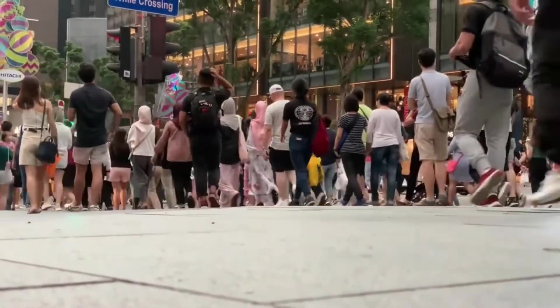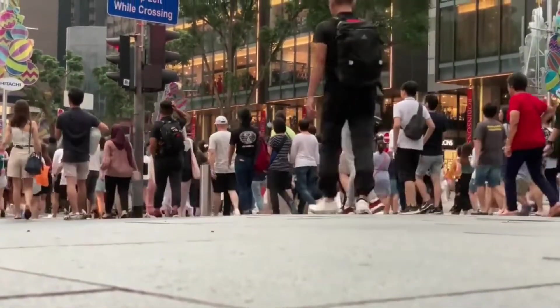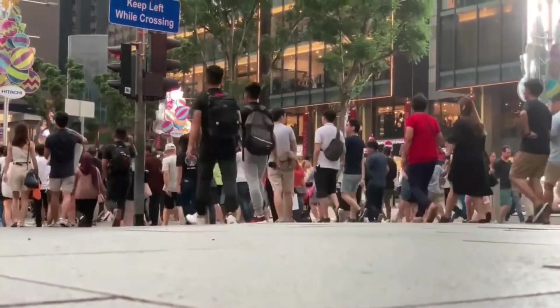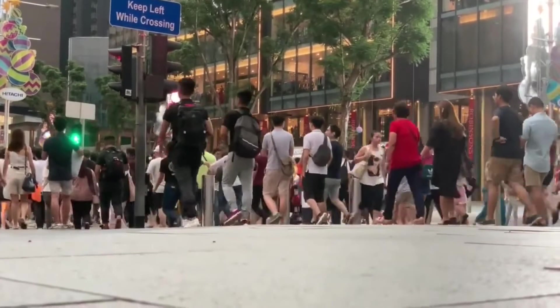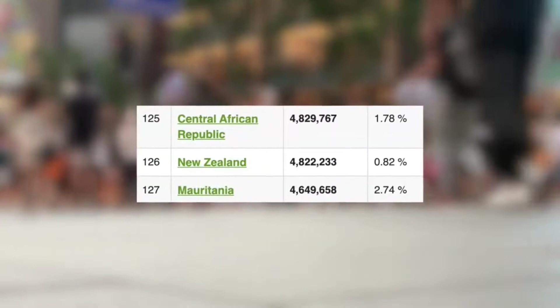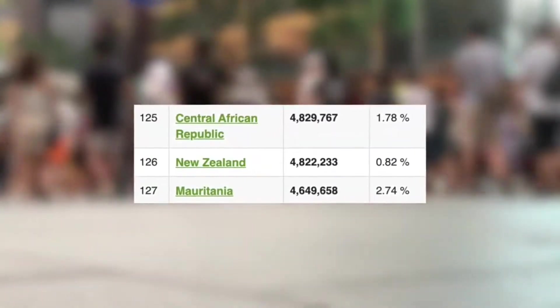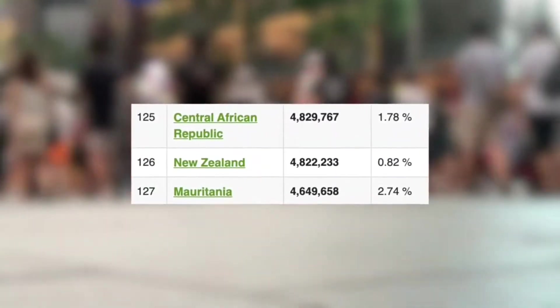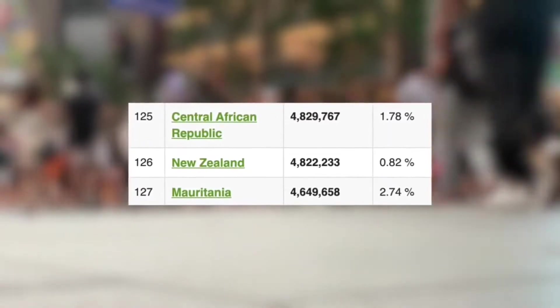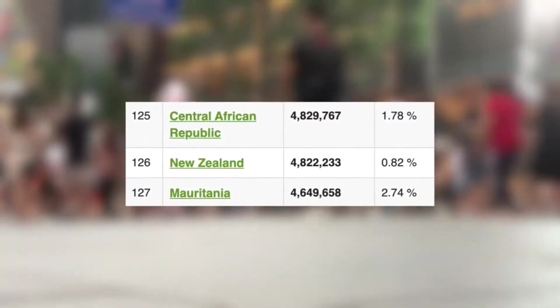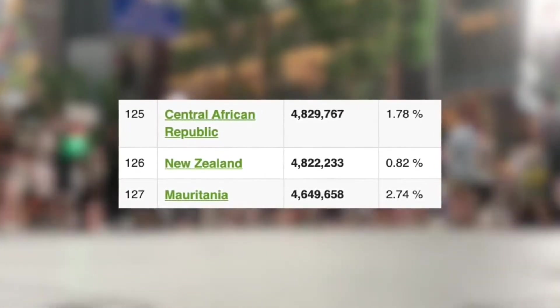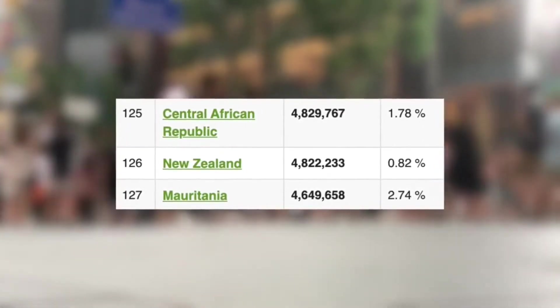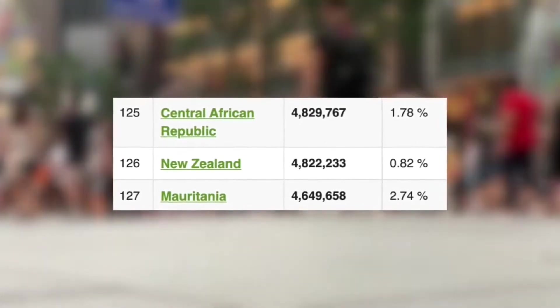So now let's jump into some key demographics, starting off with their population and population densities. The similarity of their total populations is one of the reasons why we chose these three nations. Starting off with the least populated, New Zealand, with just over 4.8 million people and a yearly growth rate of around 0.82%, making them the 126th most populated country on earth, behind the Central African Republic and above Mauritania.